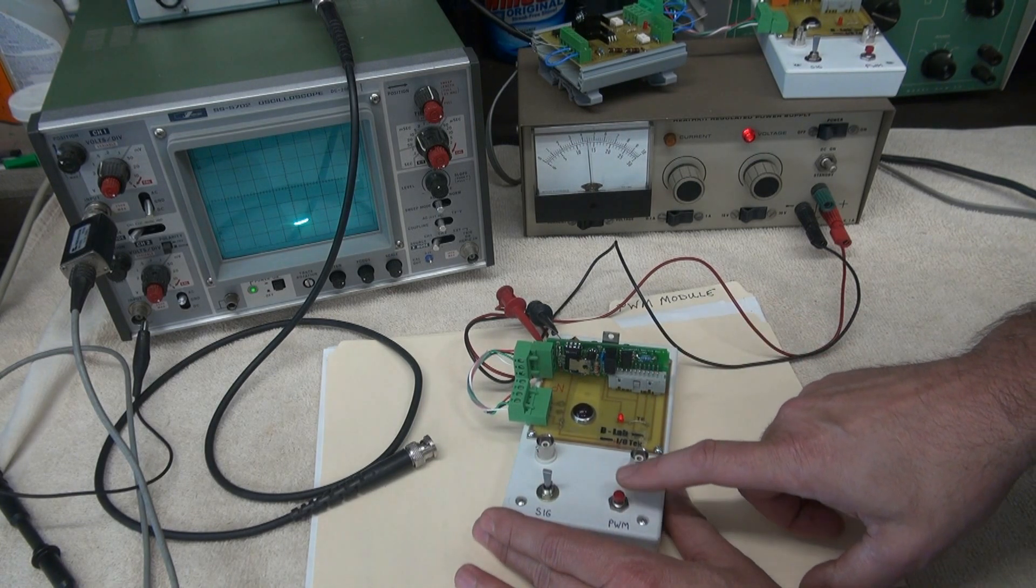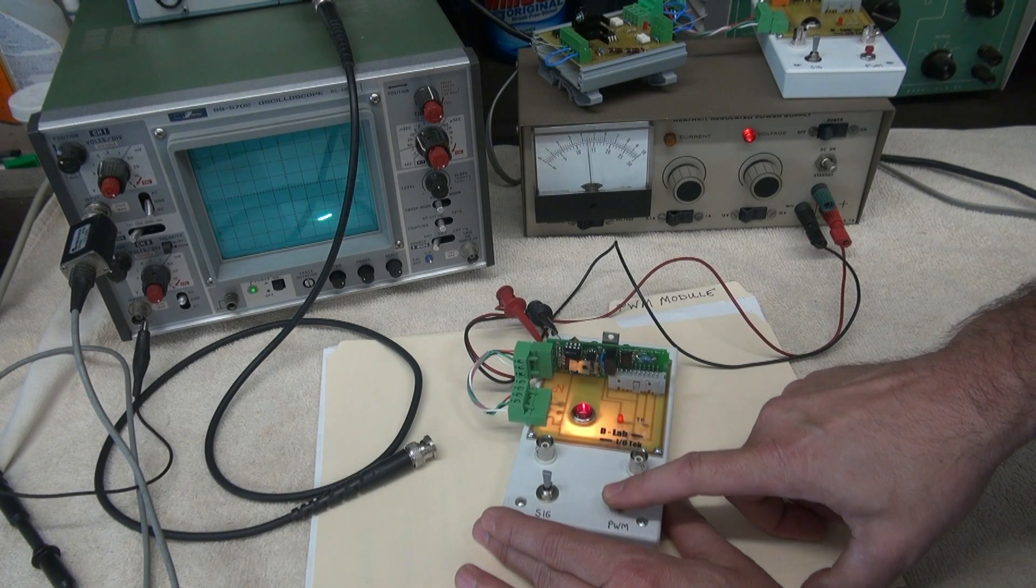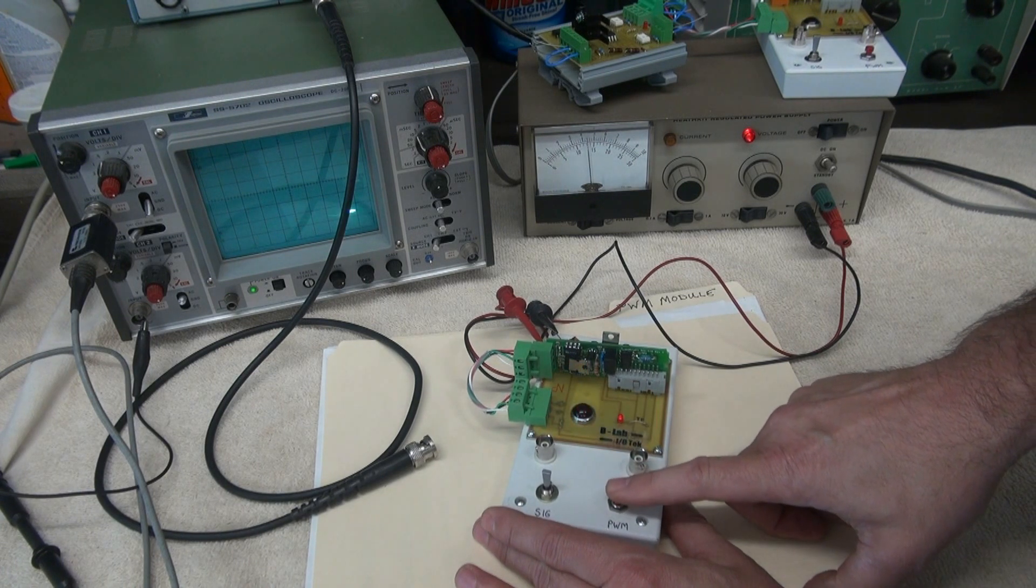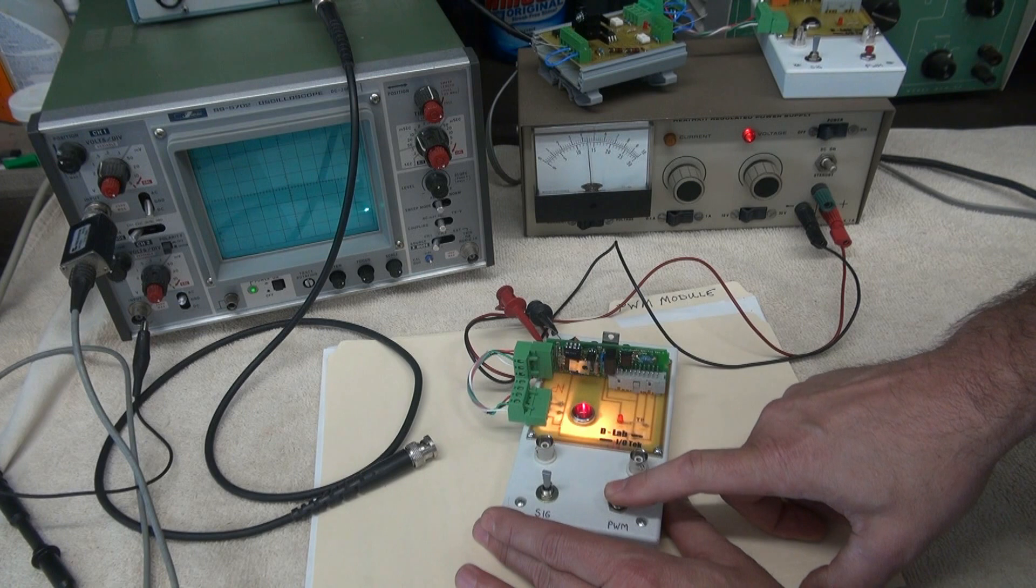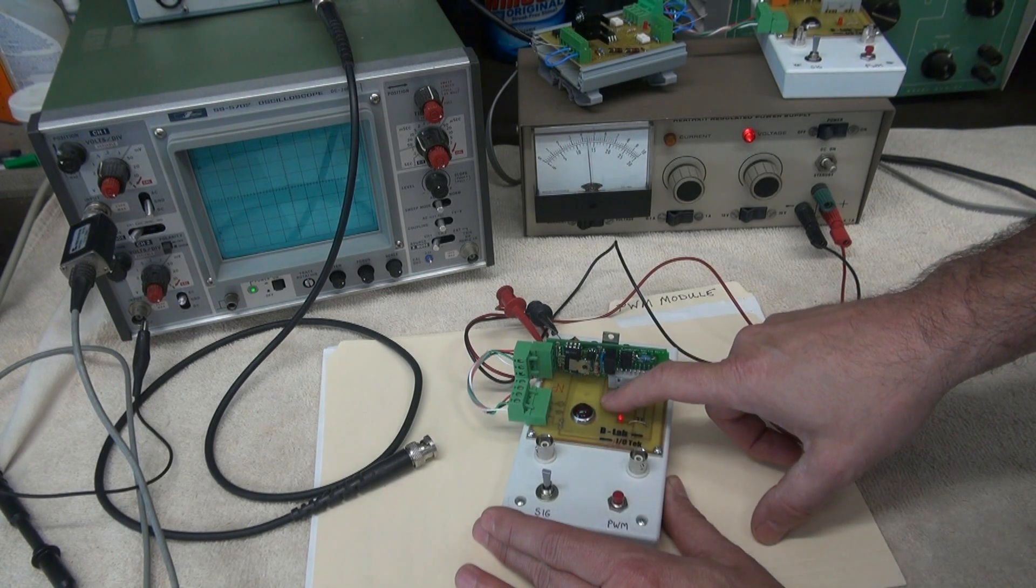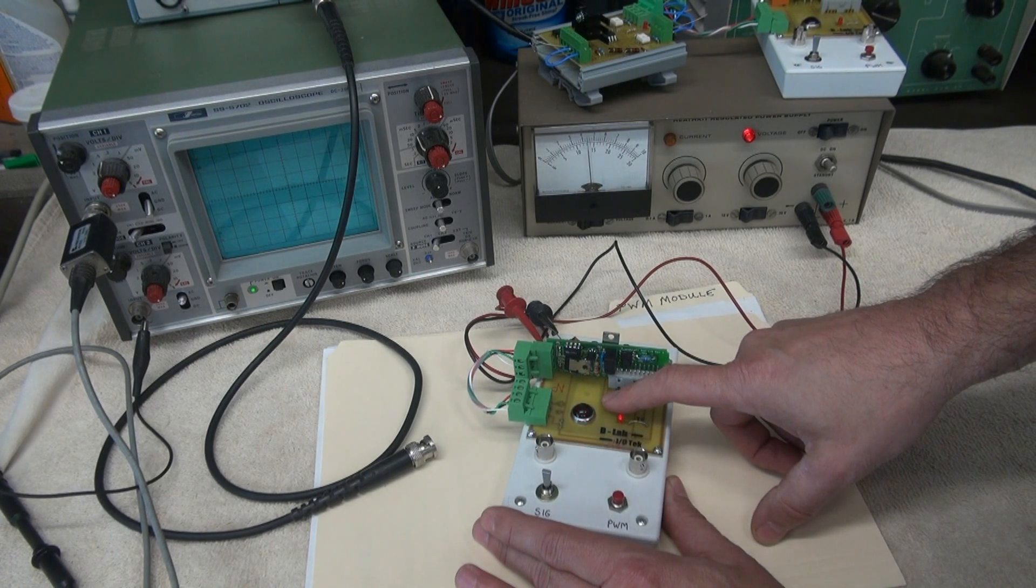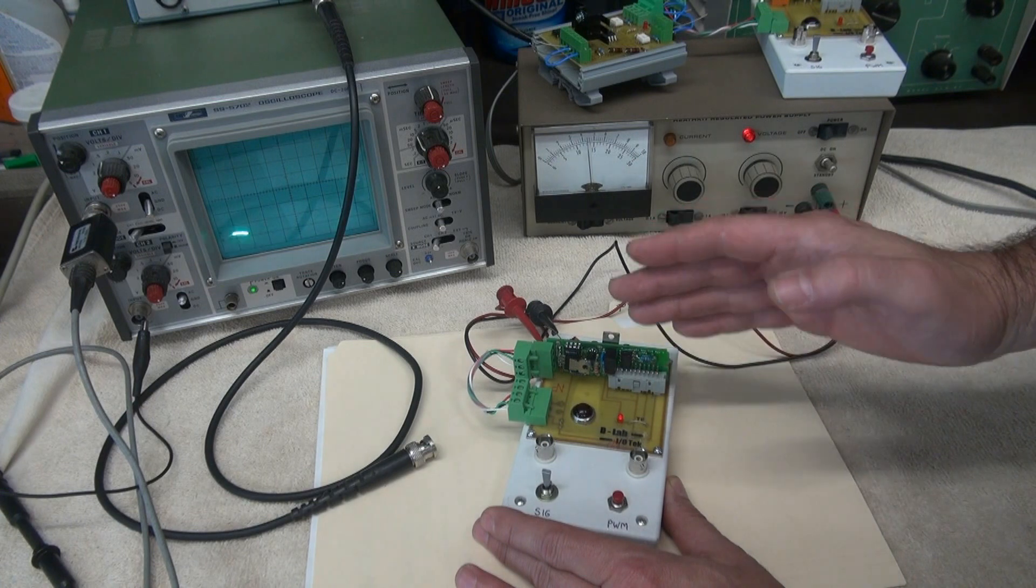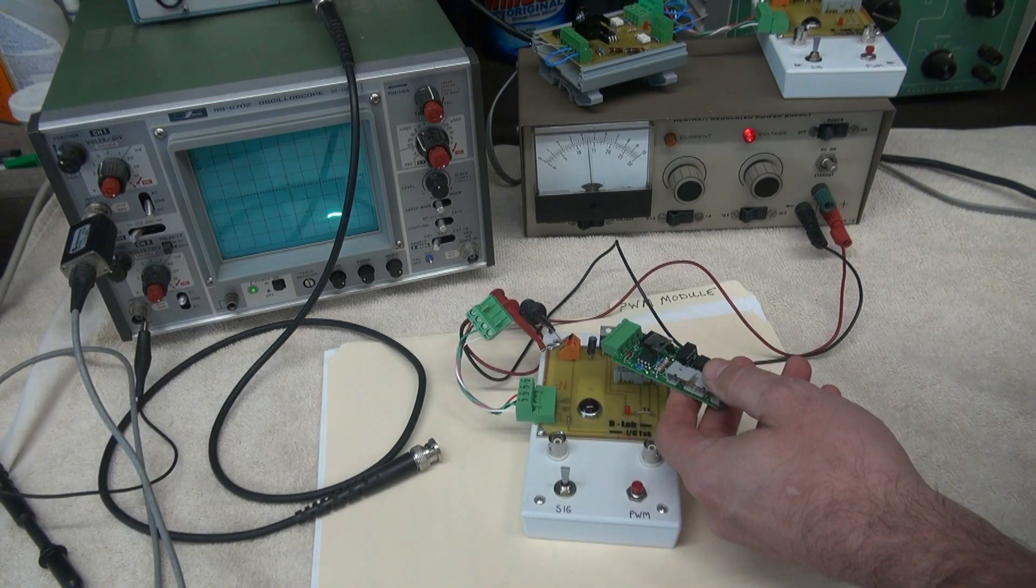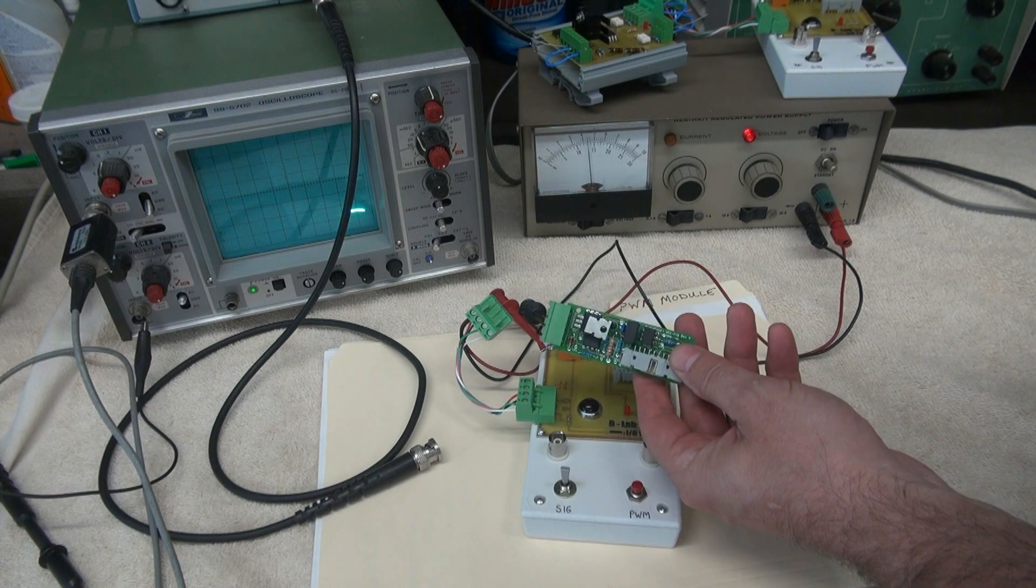Now, this switch here produces pulse width modulation. In this case, we're simulating that with a push button. And so this load that's inside here, which is an incandescent bulb, would represent the product drawing current. So that was a test of a good module.